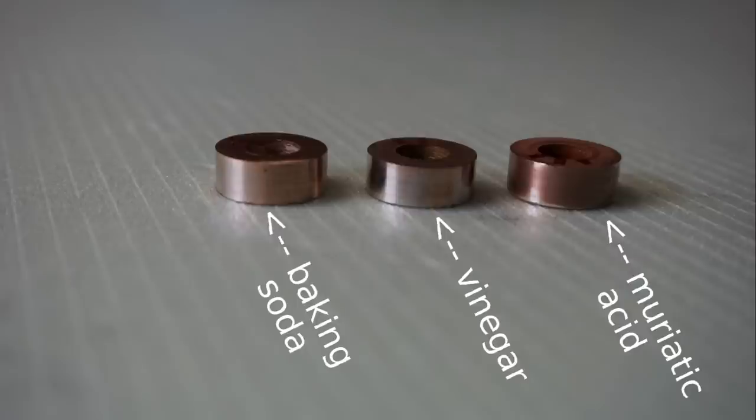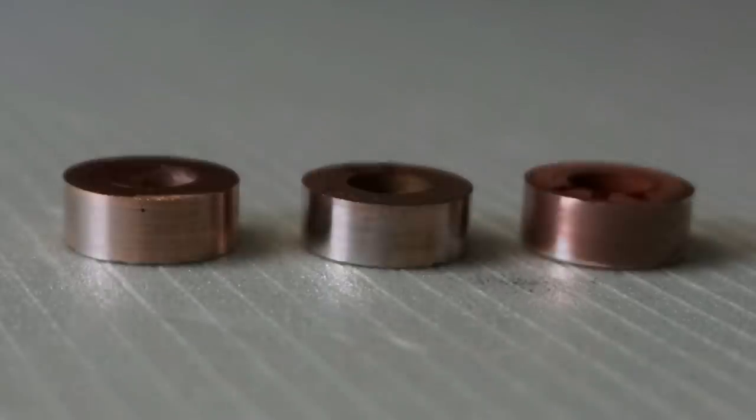So in conclusion I would use a baking soda solution if I intended to use a fixed power supply or batteries. In case you have an adjustable power supply you may use muriatic acid. But make sure you turn the power way down in order to get good surface finishes. Good luck with your attempts and thanks for watching.